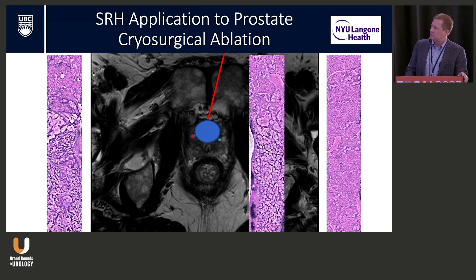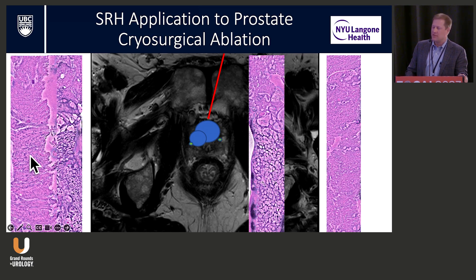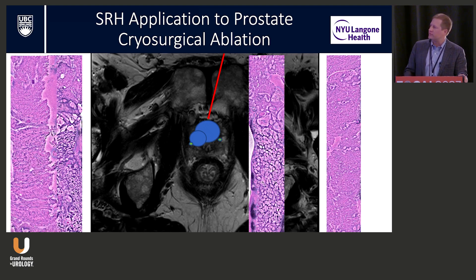That second dot on the patient's right was found with the real-time Raman histology to be positive. So you could say, now I need to extend the treatment and include that margin. We also ran the final margins after treatment, and at that point that second margin was negative. This gave us real-time feedback that our margins were treated accordingly, and we could adapt and change the treatment in real time.